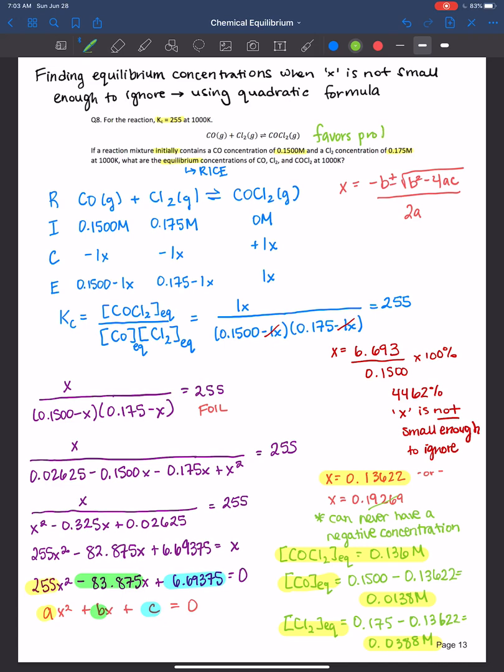So when you have an equilibrium constant greater than 1, we're favoring products. So in the end, once we do all of our calculations, we would expect to have a higher concentration of products at equilibrium than the reactants.